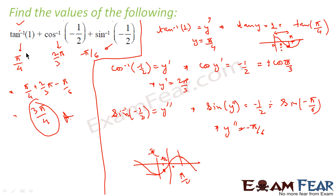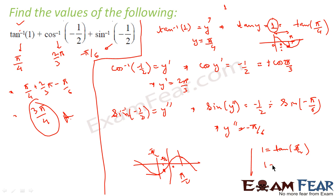Please note: always use the value that is in the principal interval only. If you use some other value, you will get a different and wrong answer. For example, 1 can be written as tan(π/4), but also as tan(π/4 + 2π) = tan(9π/4). However, we should not take 9π/4 — we should always take π/4, because π/4 is in the principal interval. Similarly, for cos and sin, we always take the value in the principal interval only.